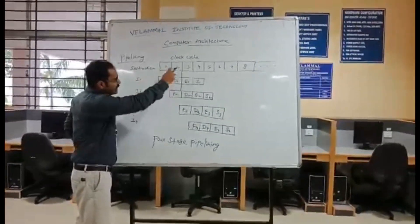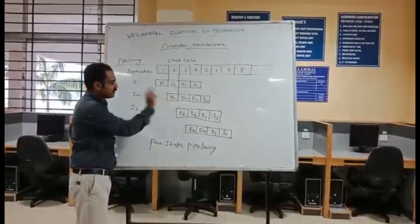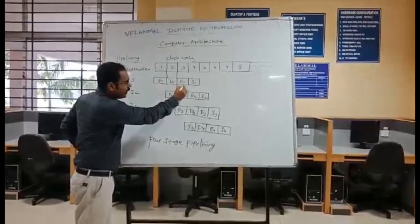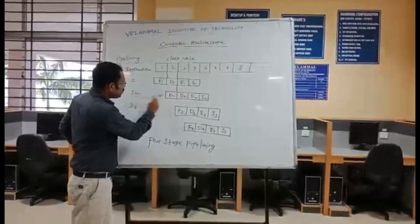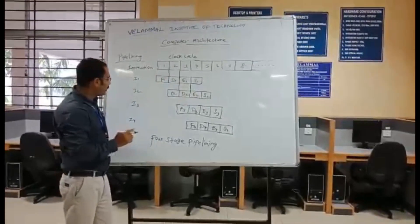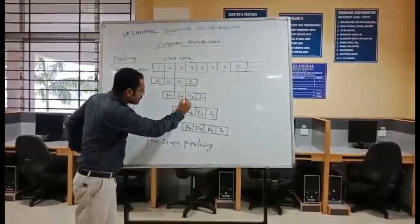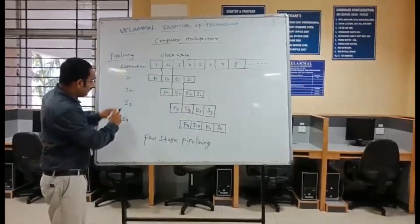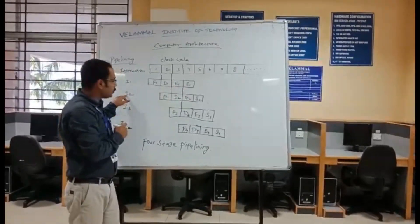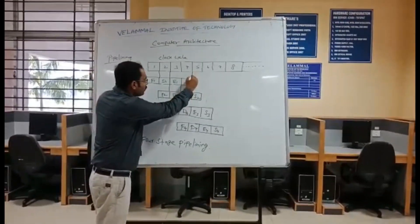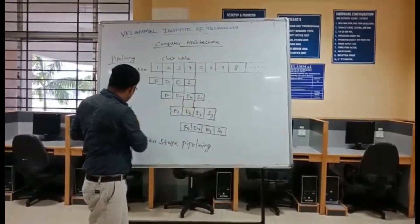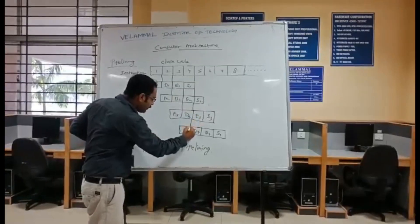In stage 1 it is decoding, while in stage 2 it is parallelly fetching the instruction. When stage 1 is executing, stage 2 is parallelly decoding its operand, and stage 3 is fetching the instruction. Then when stage 2 is executing, stage 3 is decoding it, and stage 4 is fetching it.